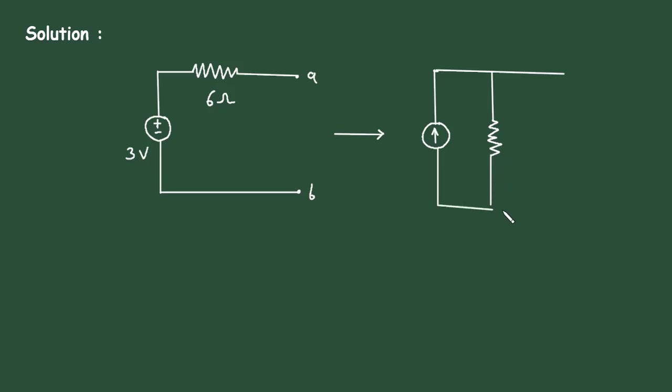The value of this resistance will remain the same - it is 6 Ohm. So this will be 6 Ohm, and this is terminal A and this is terminal B.